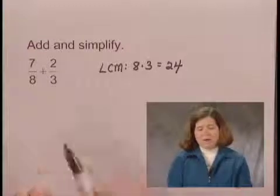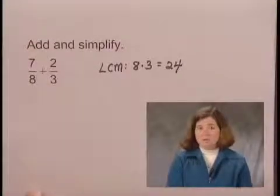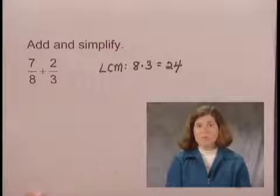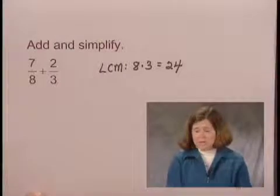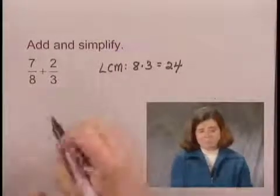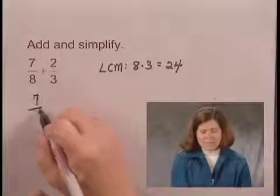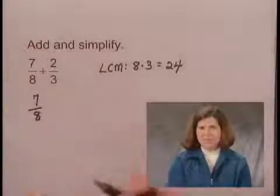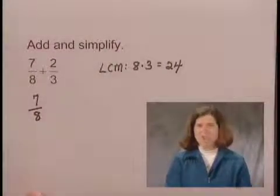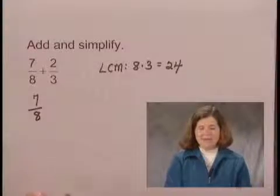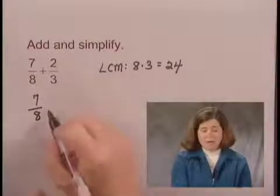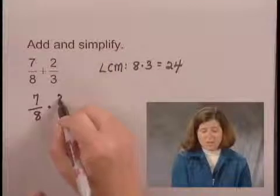So I want to write 7 eighths with a denominator of 24, and I want to write 2 thirds with a denominator of 24. In order to do that, I'm going to multiply 7 eighths times 1. So I'm not going to change the value of the fraction, but I'm going to choose a number for 1 that will give me a denominator of 24. And that form of 1 is 3 over 3.